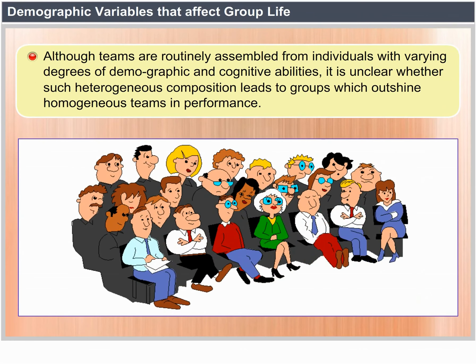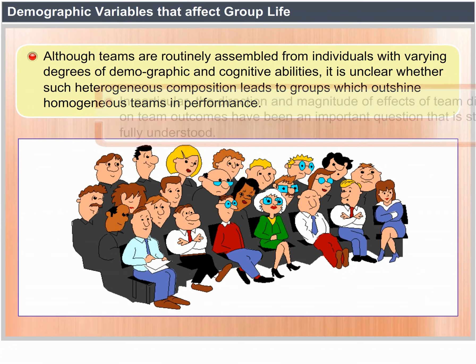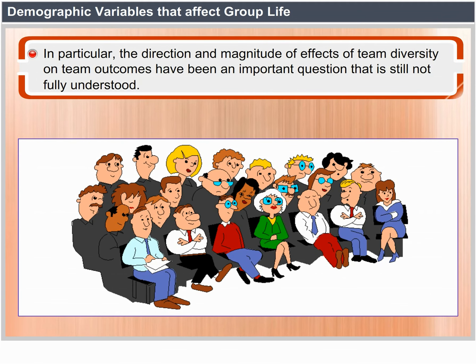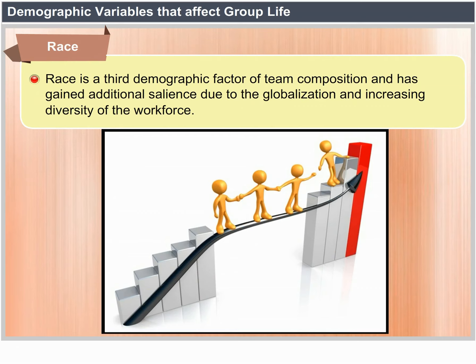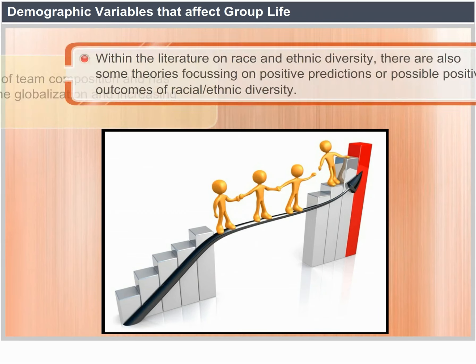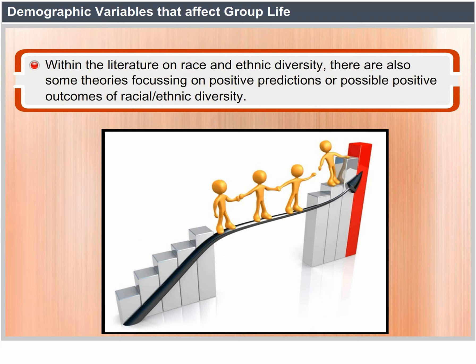Although teams are routinely assembled from individuals with varying degrees of demographic and cognitive abilities, it is unclear whether such heterogeneous composition leads to groups which outperform homogeneous teams. The direction and magnitude of effects of team diversity on team outcomes have been an important question that is still not fully understood. Race is the third demographic factor of team composition and has gained additional salience due to the globalization and increasing diversity of the workforce.